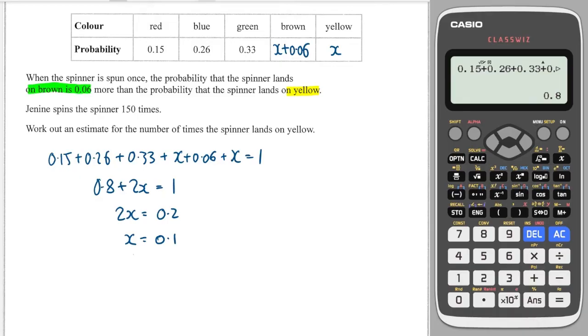And we are looking for the number of times it's yellow, which is probability of x, which is 0.1. And it's 150 times. So to figure out how much we would expect, we take the number of times and times it by the probability, and that will give me 15. So we would expect 15.